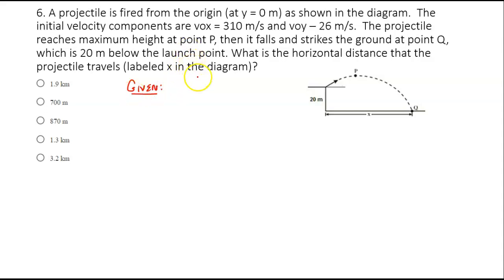So we're given that a projectile is fired. The initial components are V initial in the X direction is 310, and V initial in the Y direction is negative 26 meters per second. We're also given what I call H, which is 20 meters, probably negative 20 when we plug it in due to the direction that it's going. We're looking for X, which is right here.